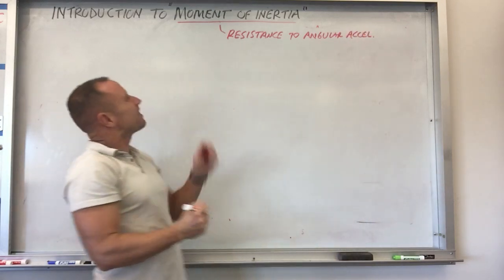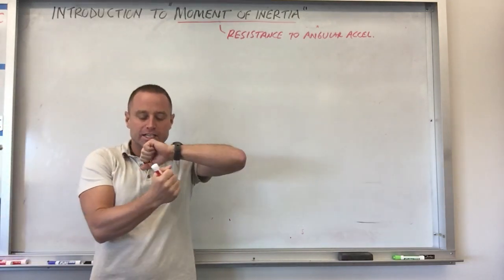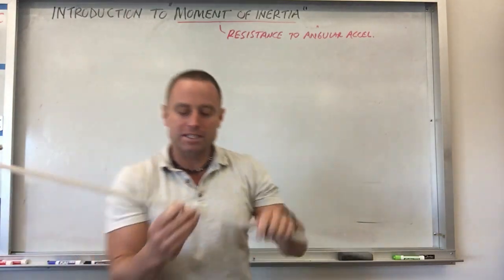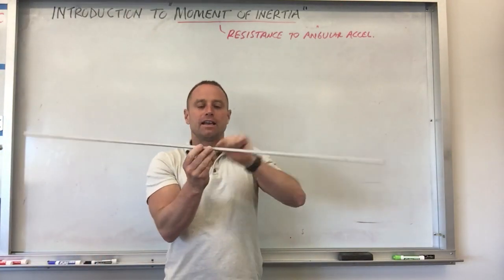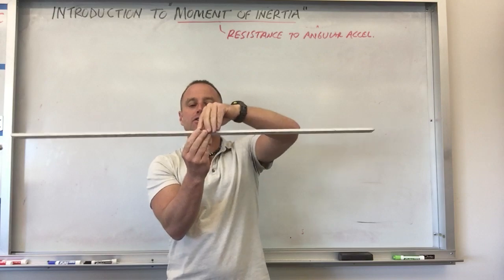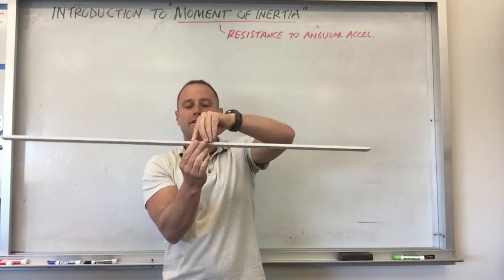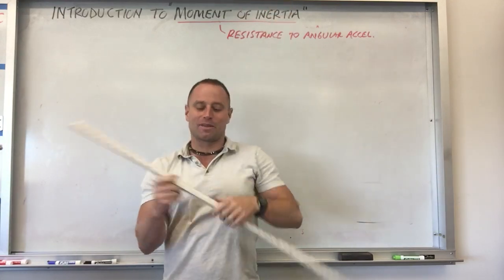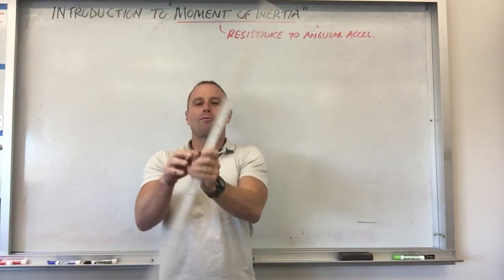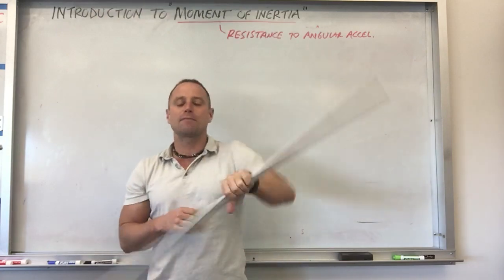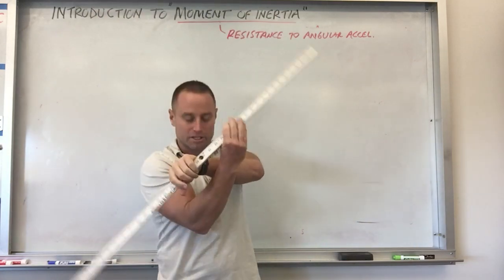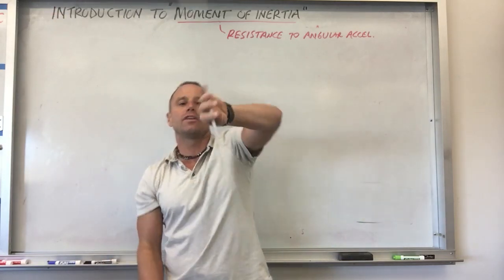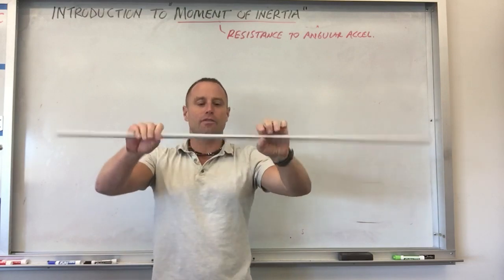Another way to say that is it lets you know how resistant an object is to having its rotational speed changed. For example, with an object like this, it's pretty easy to change the rotational speed if I rotate it this way. But if I want the thing to rotate like this ten times per second, that's much more difficult to do. So this object has a greater moment of inertia around this axis than it does around this axis.